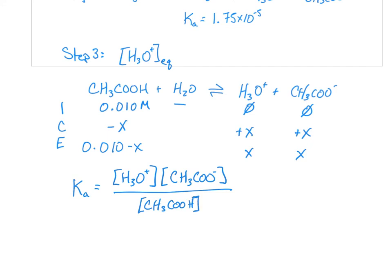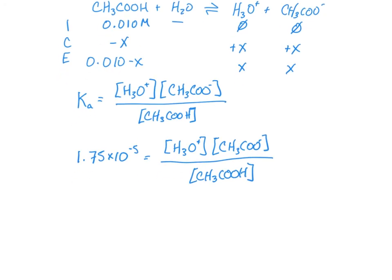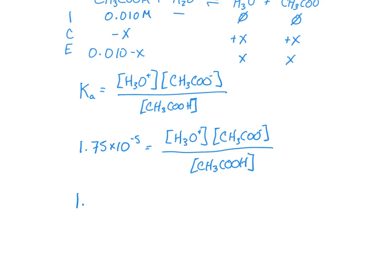And so we can set this up as 1.75 times 10 to the minus 5 is equal to our concentration of H3O+ times our acetate over our concentration of acetic acid. And I can plug in from my ice table so that I get X squared over 0.01 minus X.